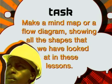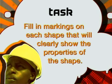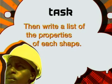Here is your task for today: make a mind map or a flow diagram showing all the shapes that we have looked at in these lessons. Fill in markings on each shape to clearly show the properties of the shape, then write a list of the properties of each shape. In the next lesson, we will look at one more special quadrilateral — the trapezium. Then we are ready to compare all these shapes and have some fun.